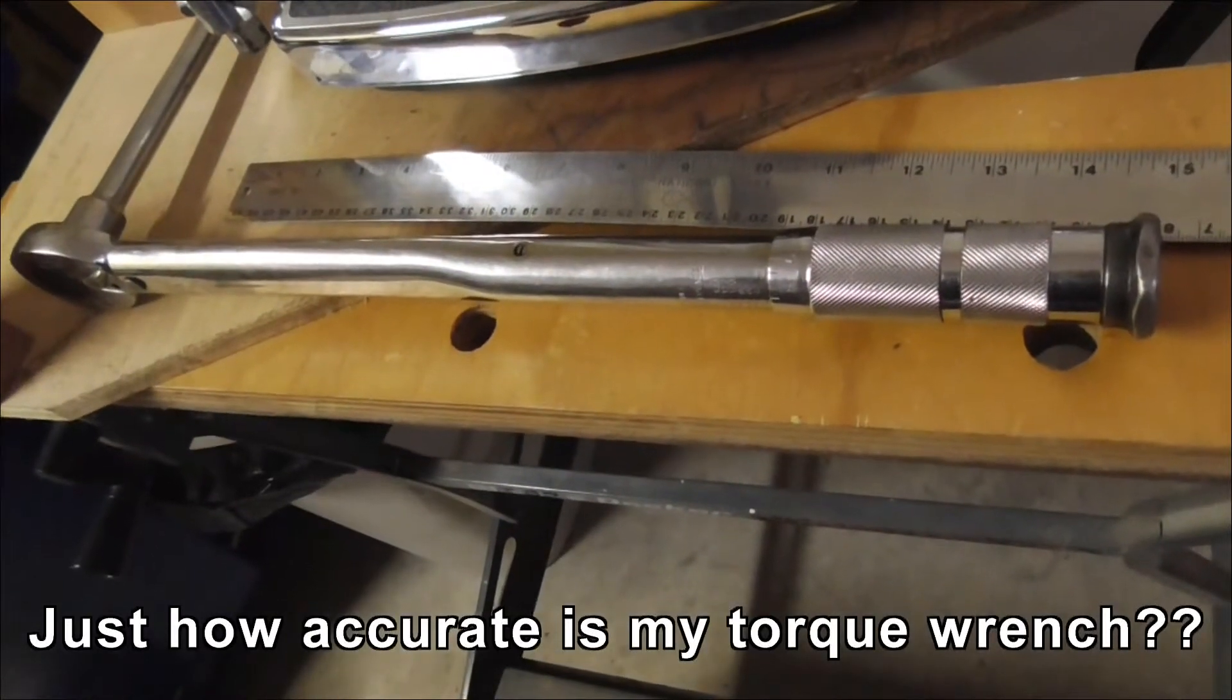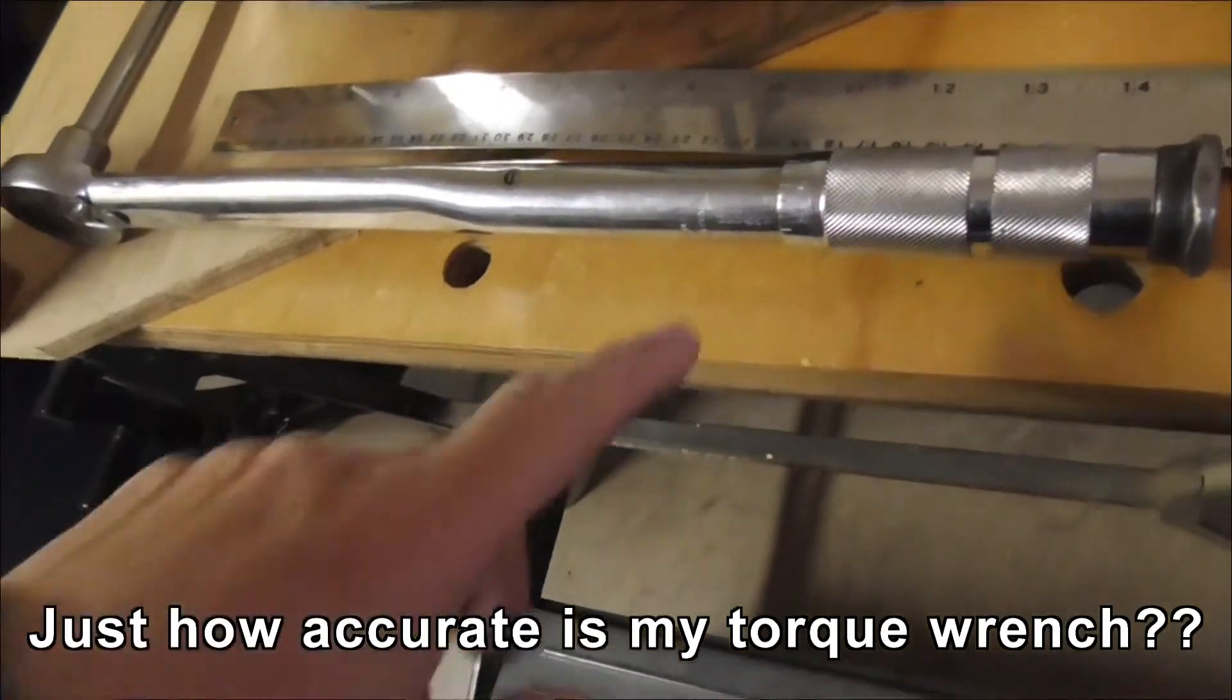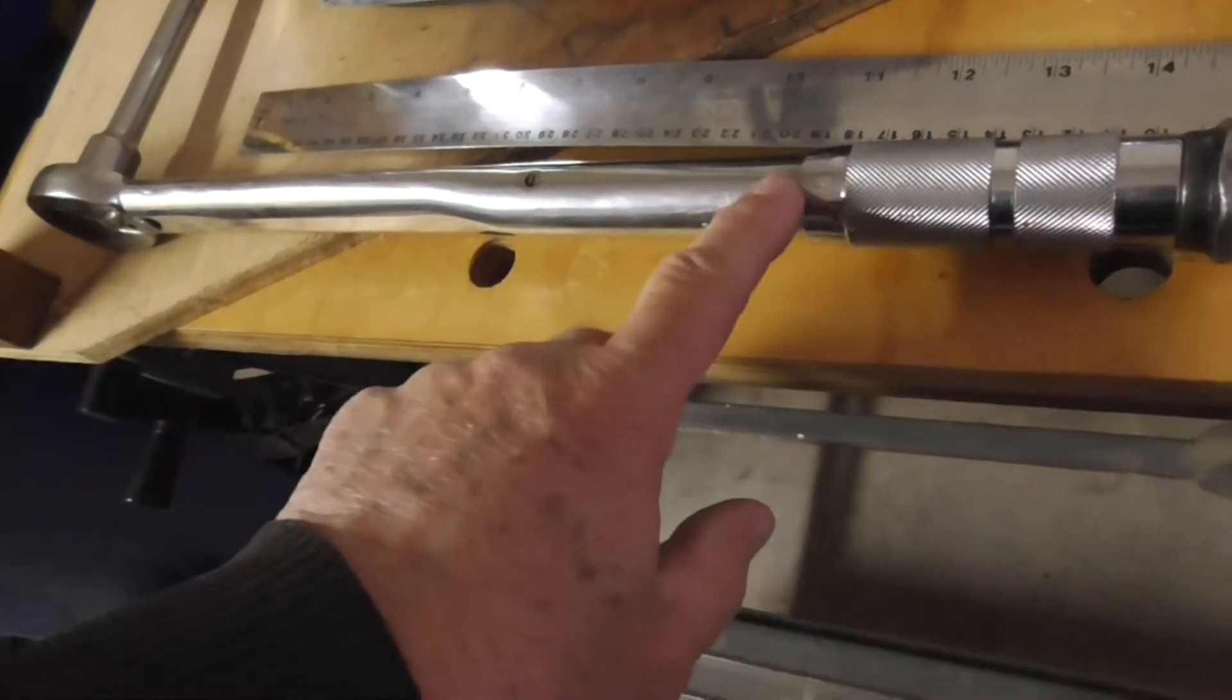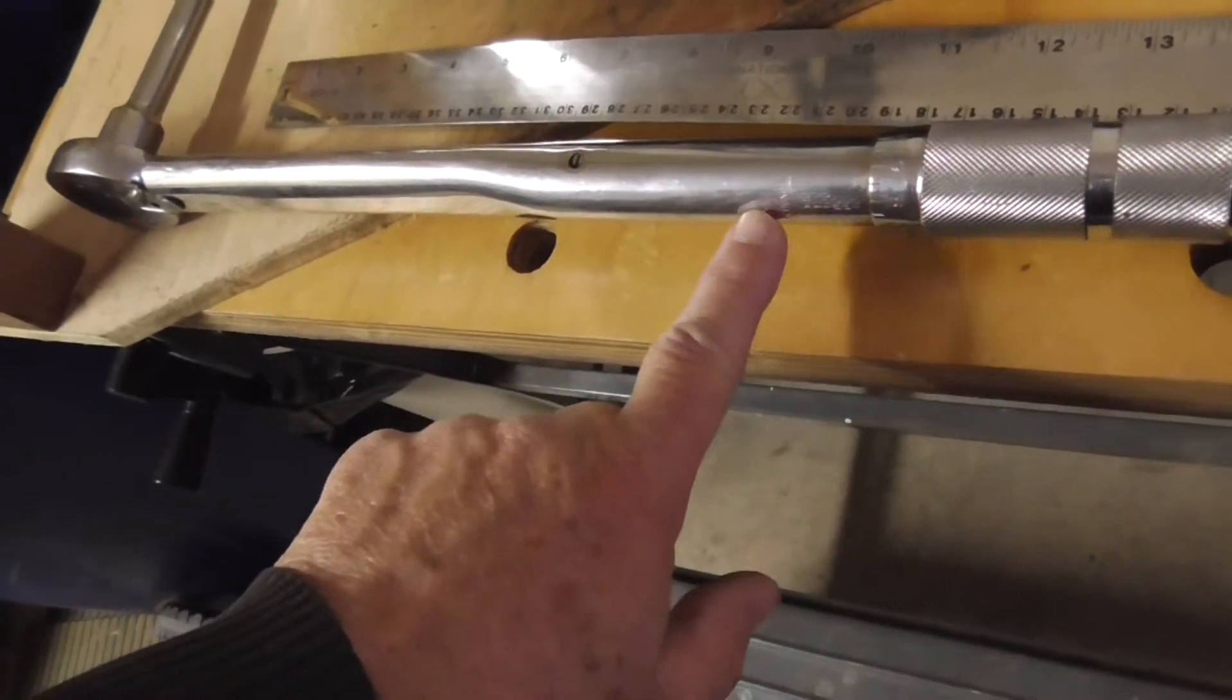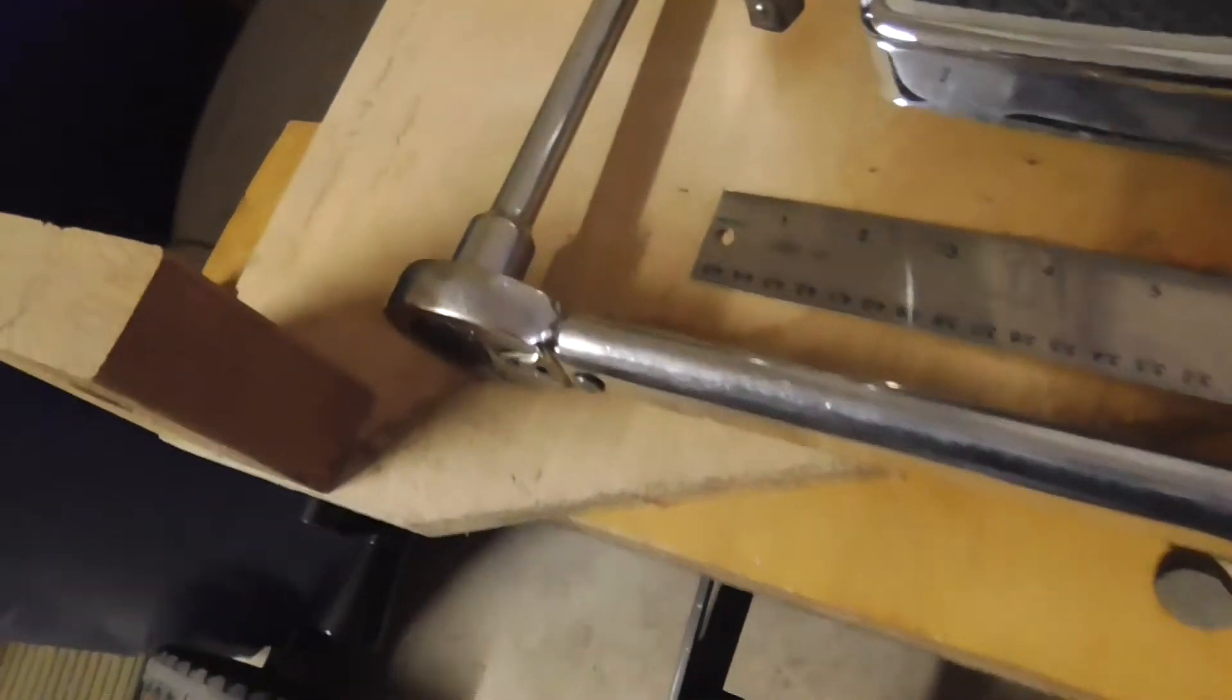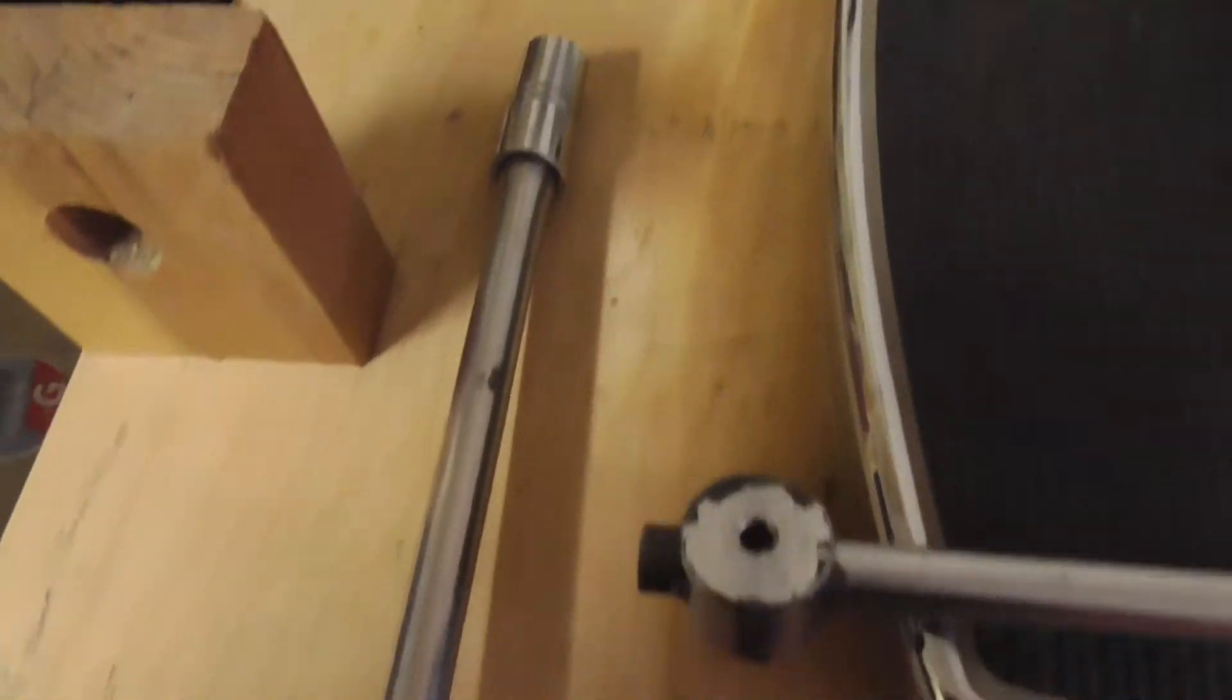The old torque wrench problem. The problem is how accurate is it? This is a click-stop style. You turn the screw here and it adjusts it. You read off the foot-pounds on this side. And it's supposed to apply that amount of torque at the other end of the wrench, which could be over here. But how do you know it's doing the right value?